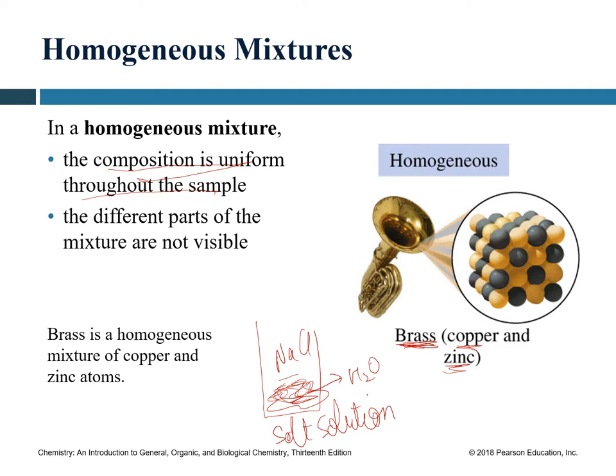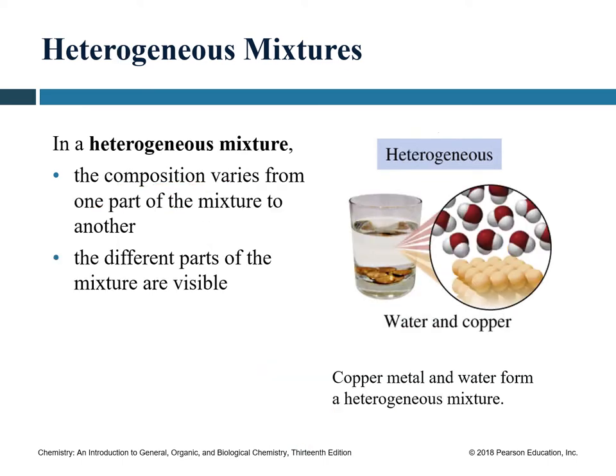In brass, you cannot simply say 'this part is copper' or 'this part is zinc' — it's very homogeneously mixed together so you cannot visibly see the two different components of a homogeneous mixture.